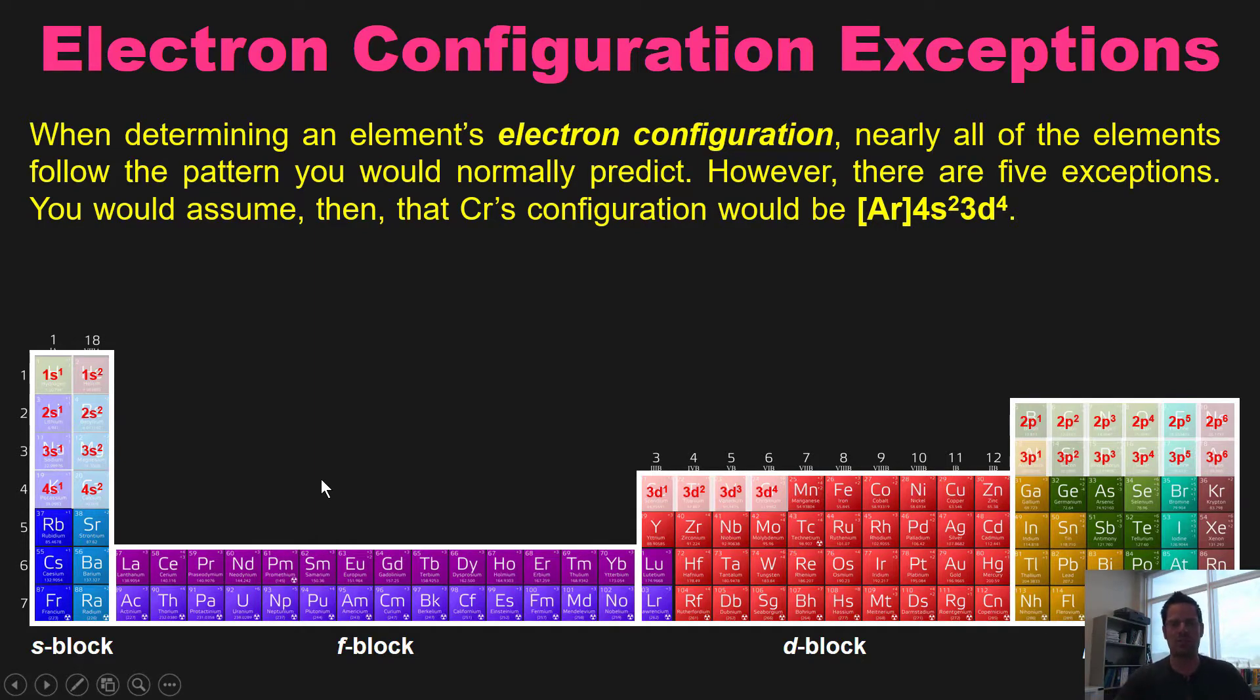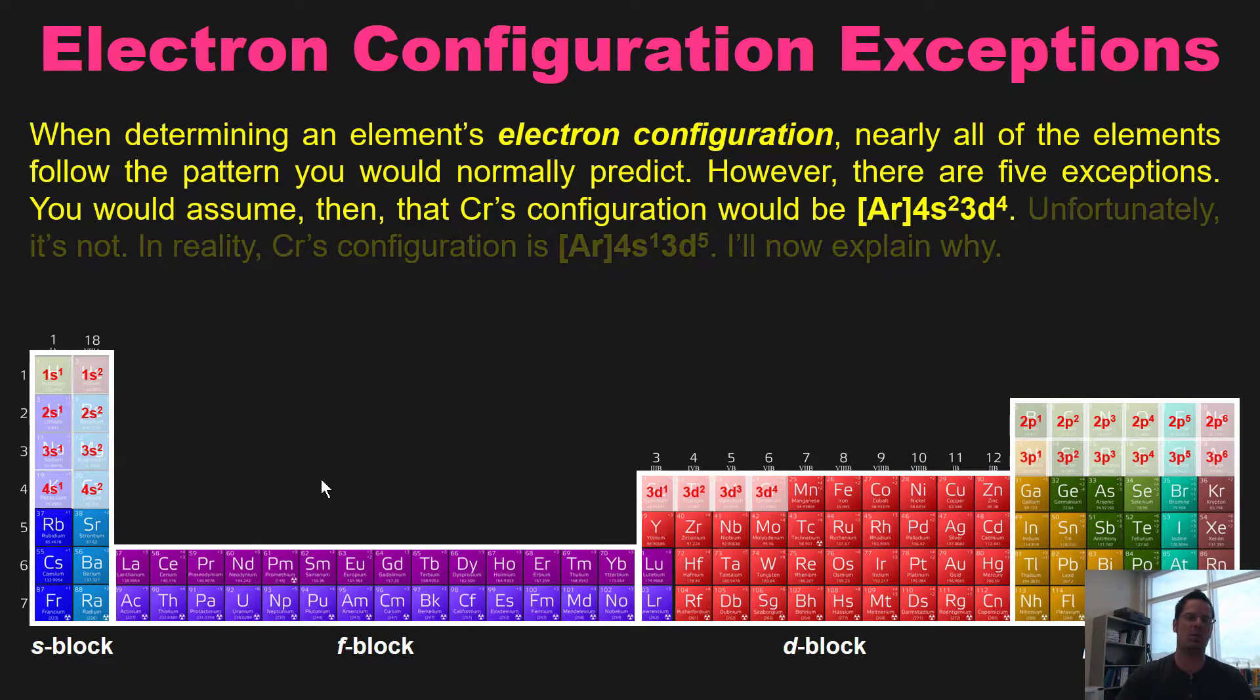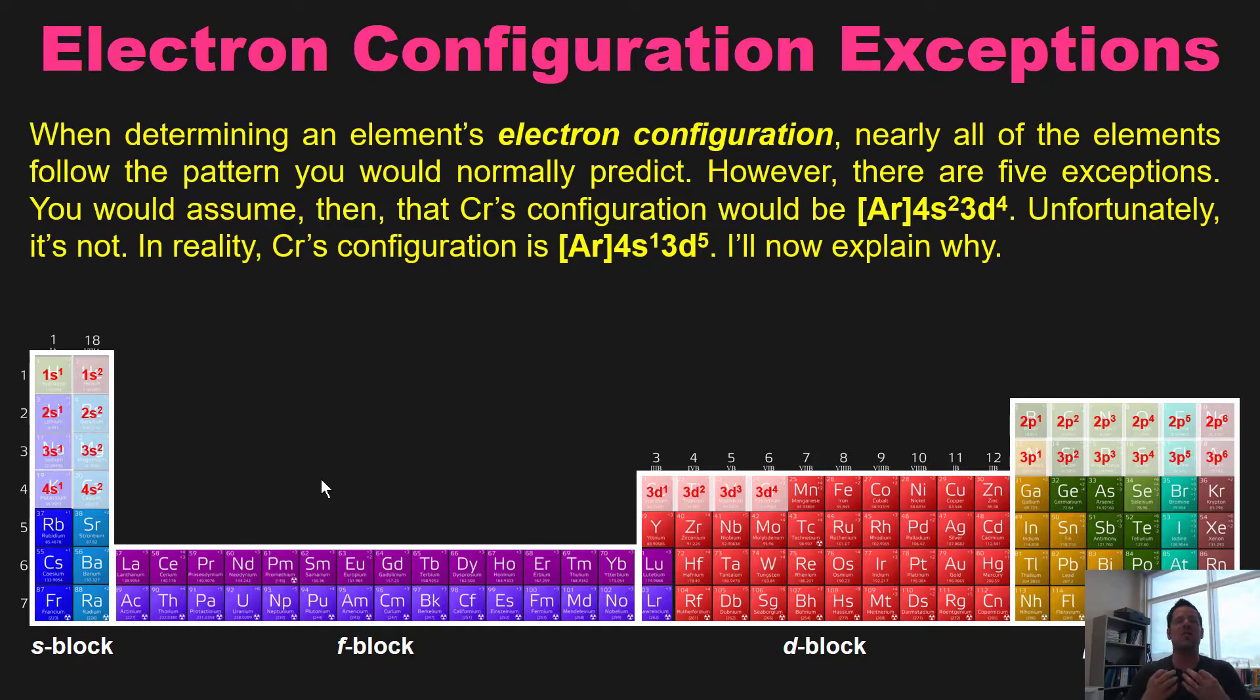However, if you assumed this, you would unfortunately be wrong. In reality, chromium's electron configuration is actually argon, 4s1, 3d5. I'll now explain to you why.